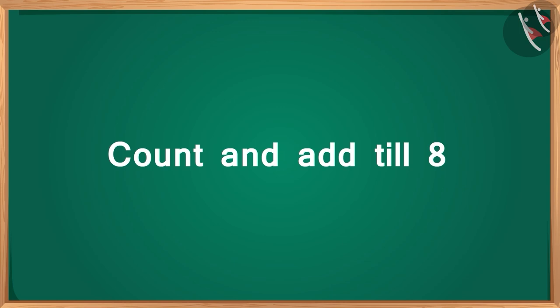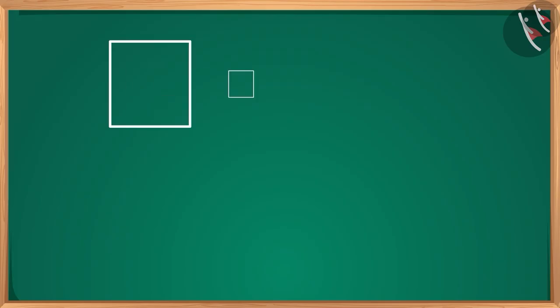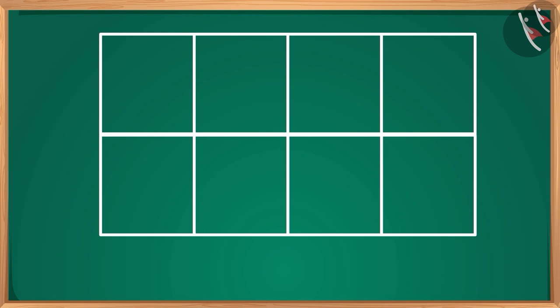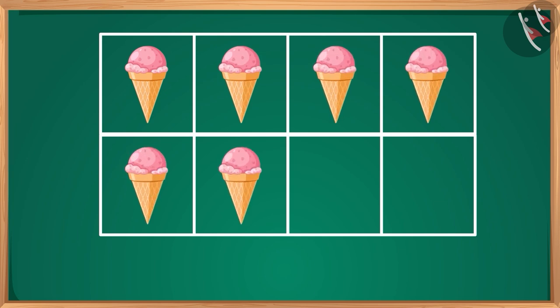Welcome students! Today we will learn how to count and add till the number eight. First, we will make eight frames like this: four on top and four at the bottom. Next, we will put six ice creams in six frames, where each frame has one ice cream. Children, can you tell me how many more ice creams we will need to fill all the eight frames?